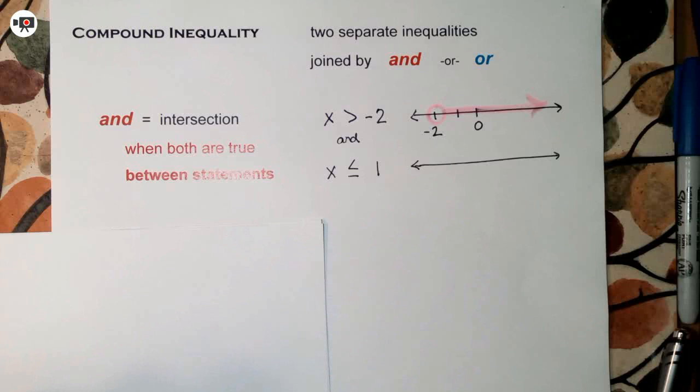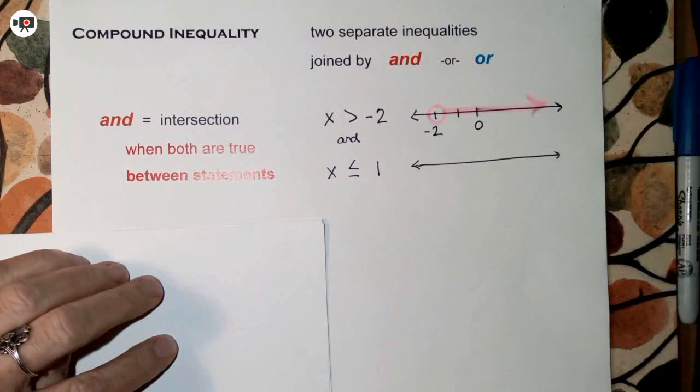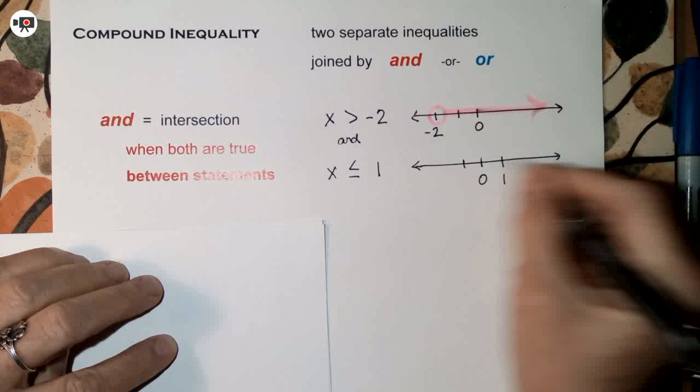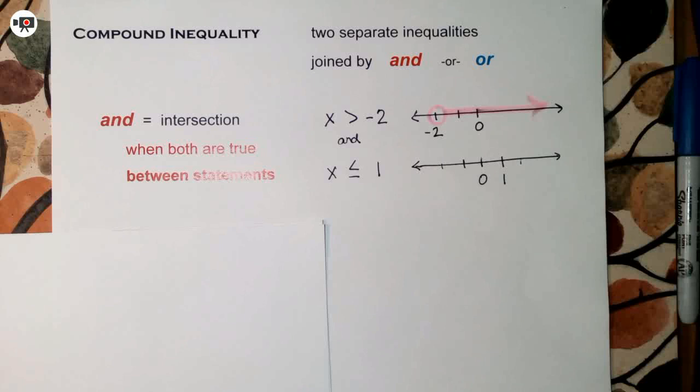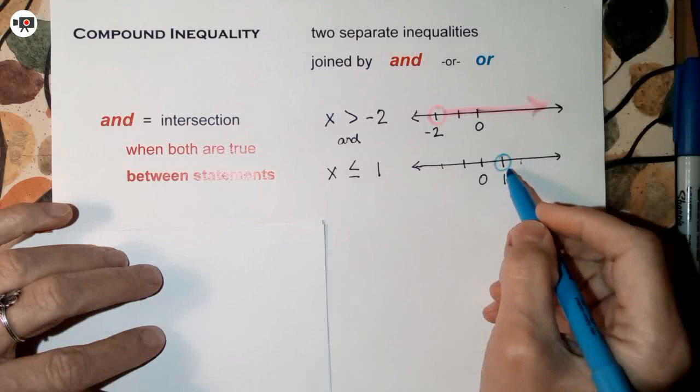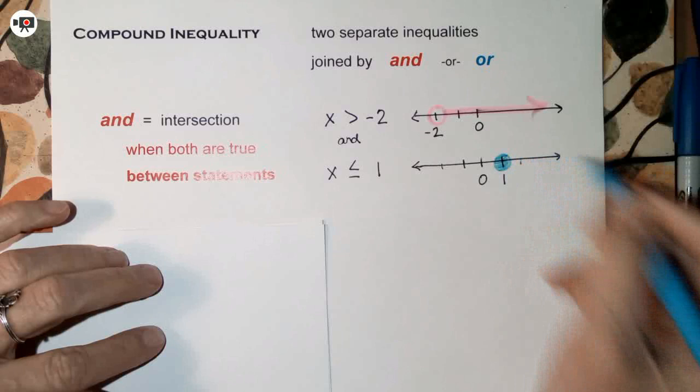Now I'll graph x is less than or equal to 1 on a new line, with 0 in the same position so you can line them up. I'll mark 0 and 1. For x less than or equal to 1, a closed (bubbled-in) circle at 1 means it can be equal to 1, and an open circle would mean only strictly less than.